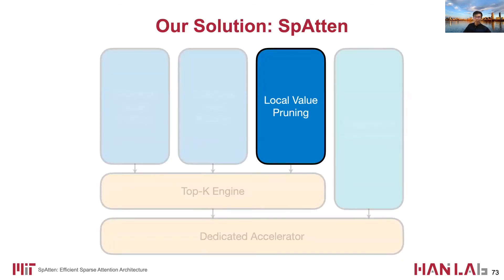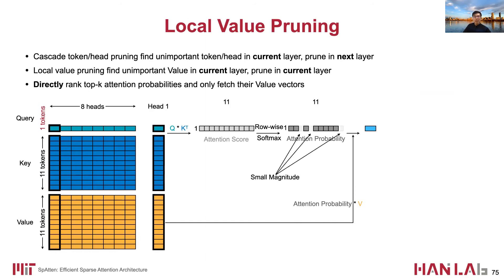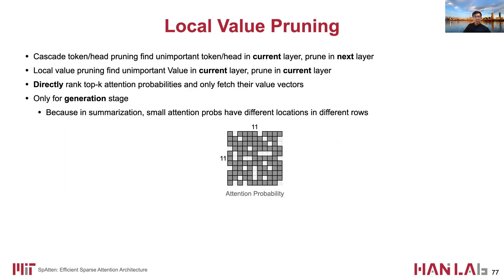Then we come to local value pruning. In cascade token and head pruning, we find unimportant tokens and heads in the current layer and prune them in the next layer. In local value pruning, it is different: we find unimportant value vectors in the current layer and prune them instantly within the same layer. We directly rank the attention probabilities — if the magnitude for certain positions is very small, we don't need to fetch corresponding value vectors, since zero times anything gives zero. This process can only be applied to the generation stage because in summarization, near-zero probabilities appear at different locations in different rows.